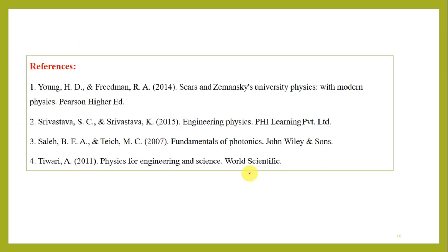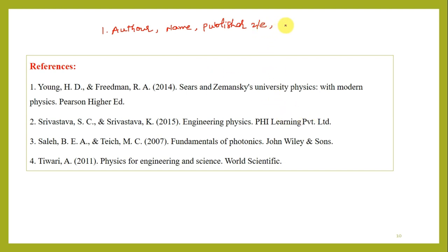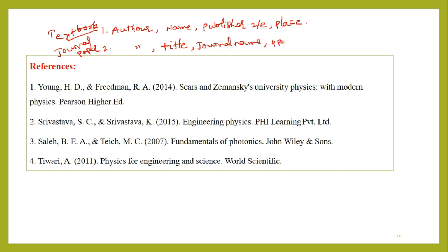Next is references. Whatever information we provided was drawn from engineering books. The standard process for a textbook reference is: first author, textbook name, publisher, edition (e.g., second or third edition), and place of publication. If it is a journal paper, we have to include: author's name, title of the paper, journal name, page numbers, and volume — that standard information we have to keep in the reference.